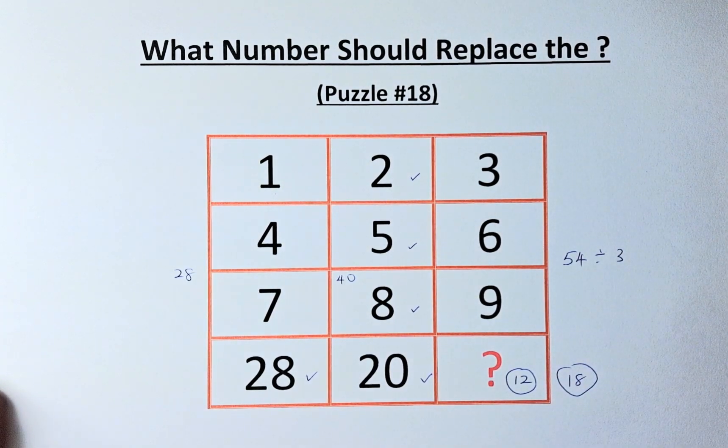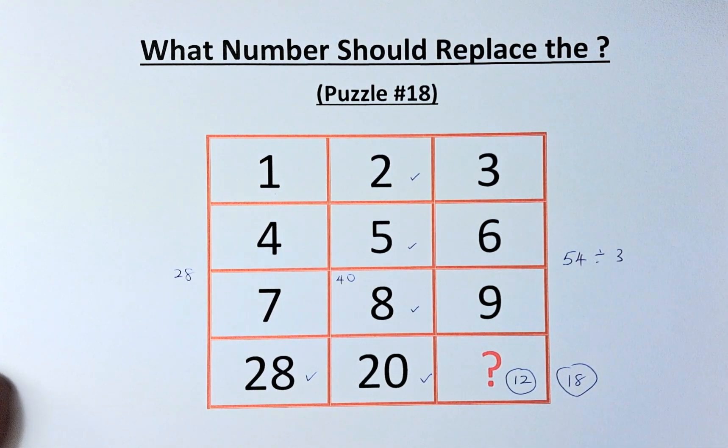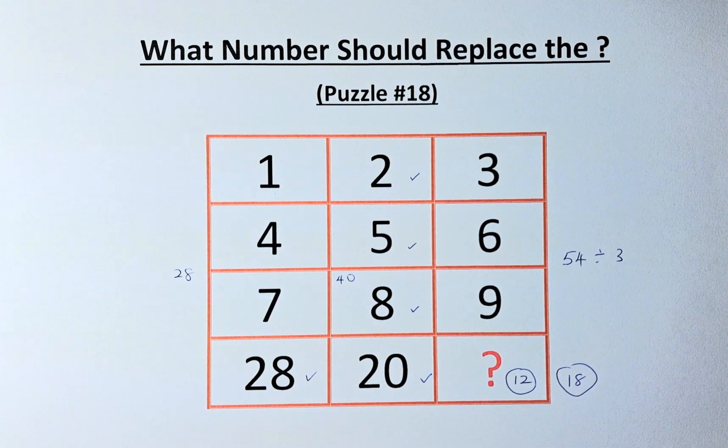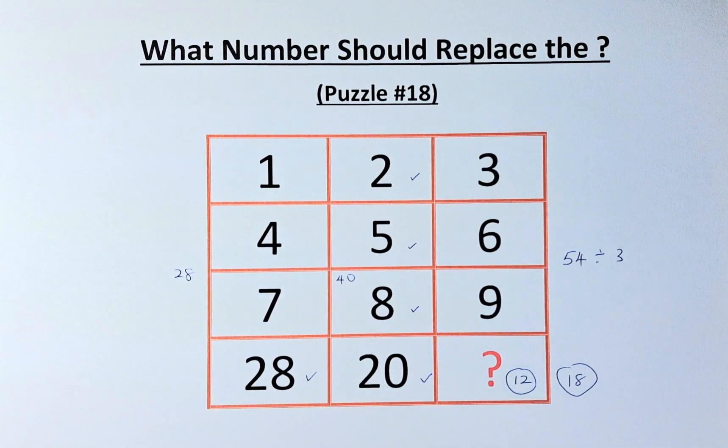Puzzle 18 has 2 solutions. The first solution is 12, and puzzle 18 has another solution, which is 18. See you in the next one, and subscribe for more. Cheers everyone, and have a good day.